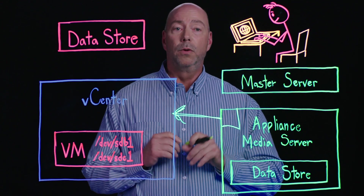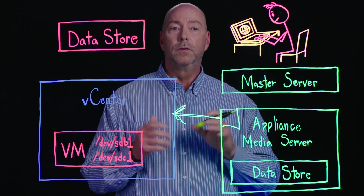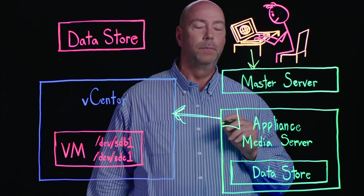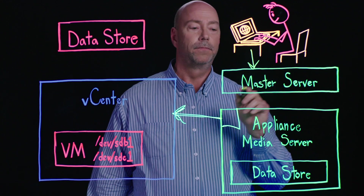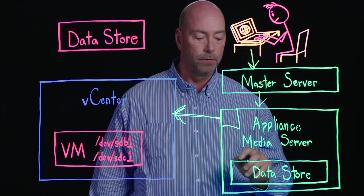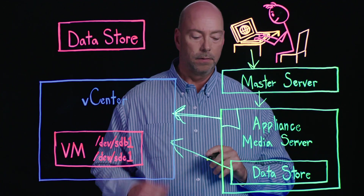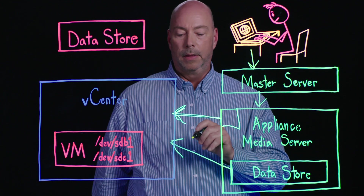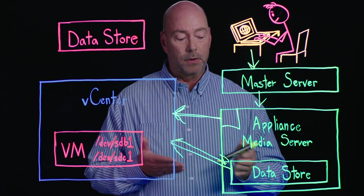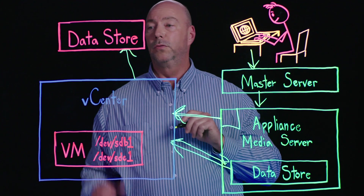For recovery, we have a number of different options to restore your data. The most popular and our newest is what we call instant access. With instant access, the user puts a request into the master server and looks at the different recovery points for your VM. That request goes down into the appliance and we generate what we call a universal mount point, which creates a data store that gets used in vCenter. You can do up to 50 of these concurrently, running an environment off this data store or doing a storage vMotion into the data store.